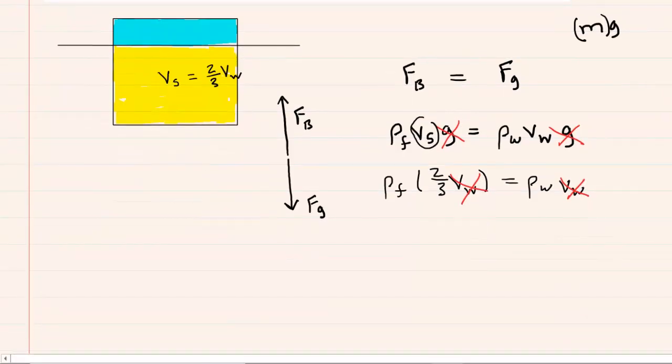And now, we are in business. We're trying to calculate the density of the wooden block, and we can now see that it's just going to equal the density of the fluid multiplied by two-thirds. That will give us the density of the wooden block.